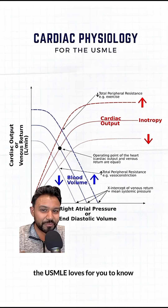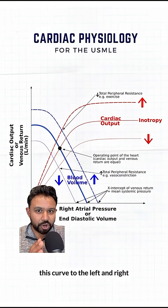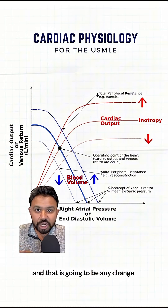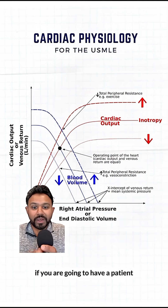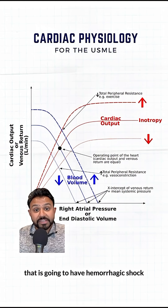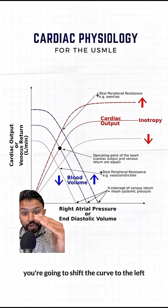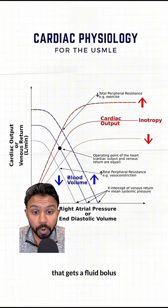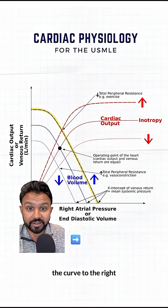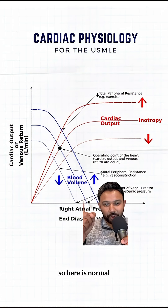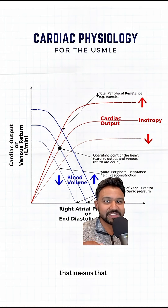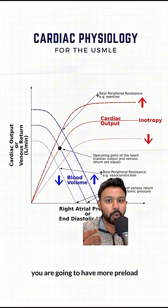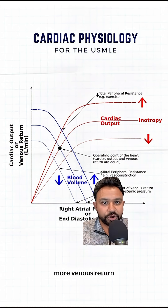The USMLE loves for you to know what is going to shift this curve to the left and right, and that is going to be any change in blood volume. If you have a patient in hemorrhagic shock, you're going to shift the curve to the left. If a patient gets a fluid bolus, you shift the curve to the right — meaning a blood transfusion or fluid bolus gives you more preload and more venous return.